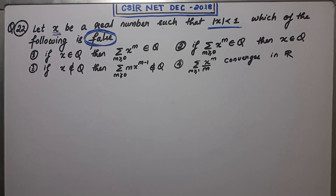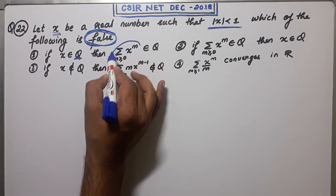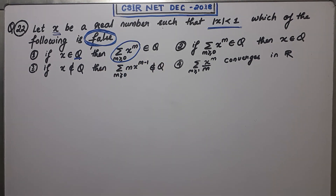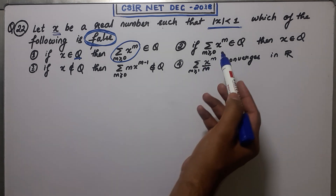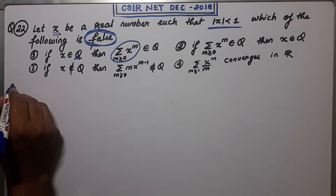The first option says: if x belongs to the set of rationals, then its summation series also belongs to the set of rationals. The second option says something similar. Then there are third and fourth options. You have to choose which one of them is false, so go through them one by one.